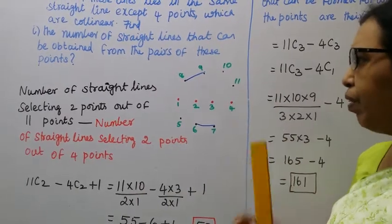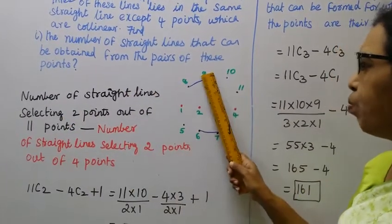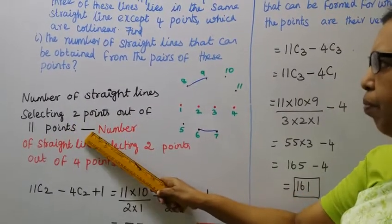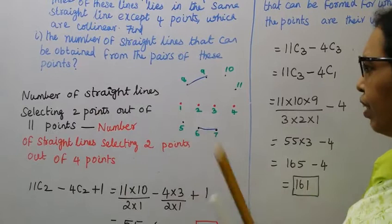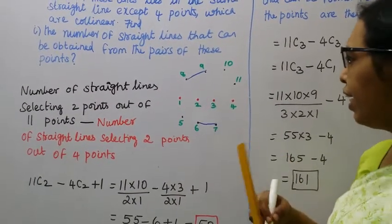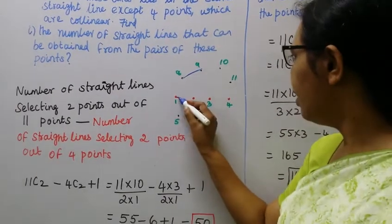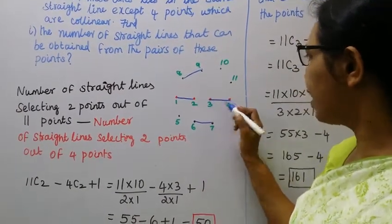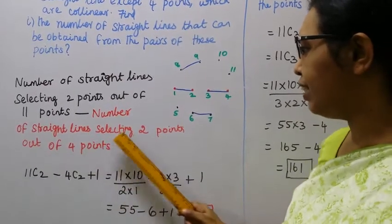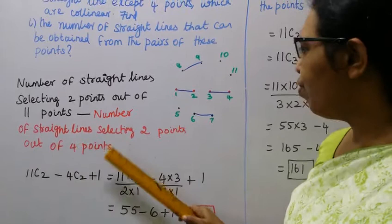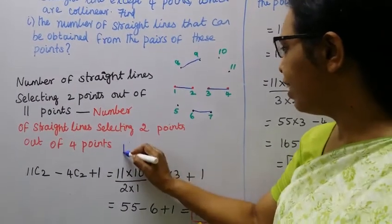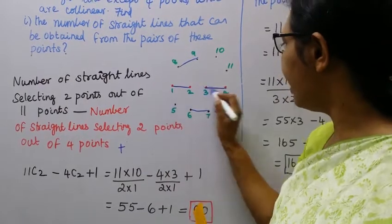So, the number of straight lines is selecting 2 points out of 11 points. Minus 4 points - because if I draw like that with 2 points, it will be the same straight line. So it's 2 points minus the number of straight lines selecting 2 points out of 4 points.